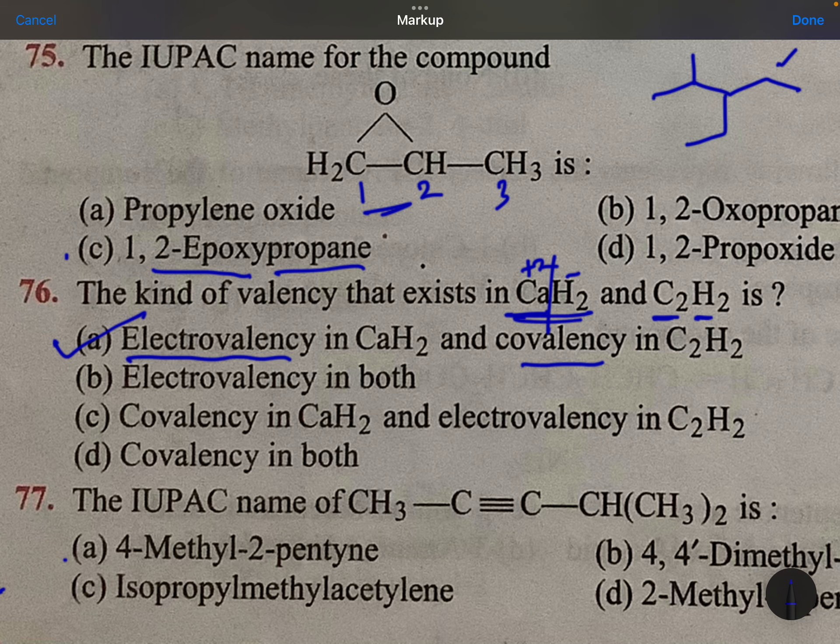The IUPAC name of something mentioned here. 1, 2, 3, 4. It is attached to fifth carbon. Here one more carbon is there. So 4-methyl, 2-pentane. 4-methyl, 2-pentane. So signing off.